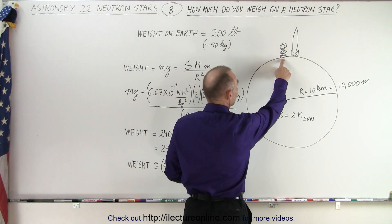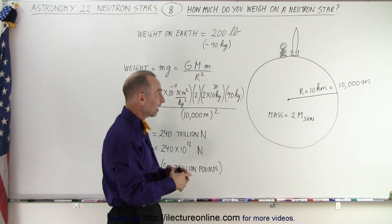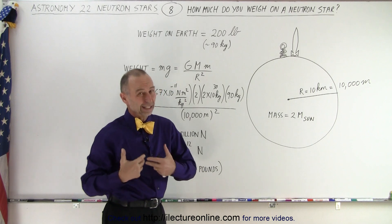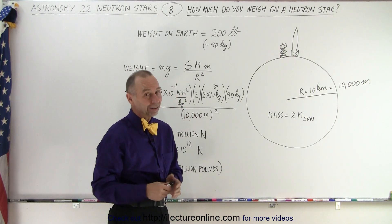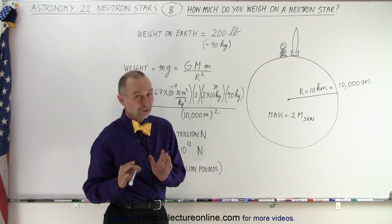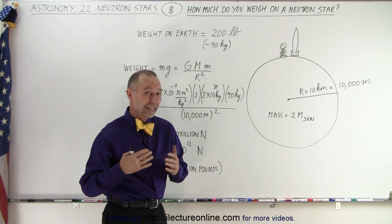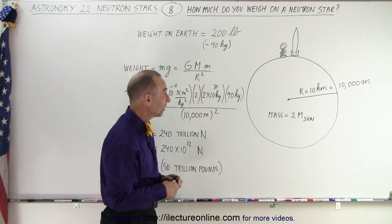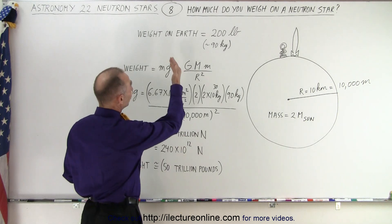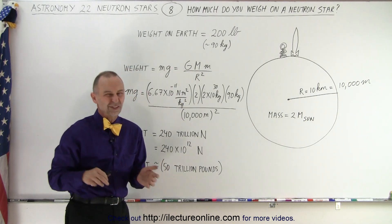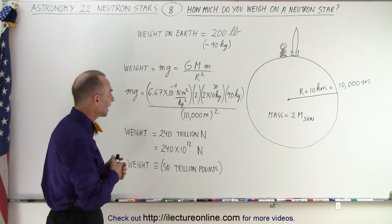You bring down your bathroom scale, you place it down on the ground, you get outside there — obviously you need a spacesuit. You get on top of your scale — it has to be a special scale that can read very heavy weights. And how much would you weigh? Let's say on Earth you weigh 200 pounds, which is equivalent to a mass of about 90 kilograms.